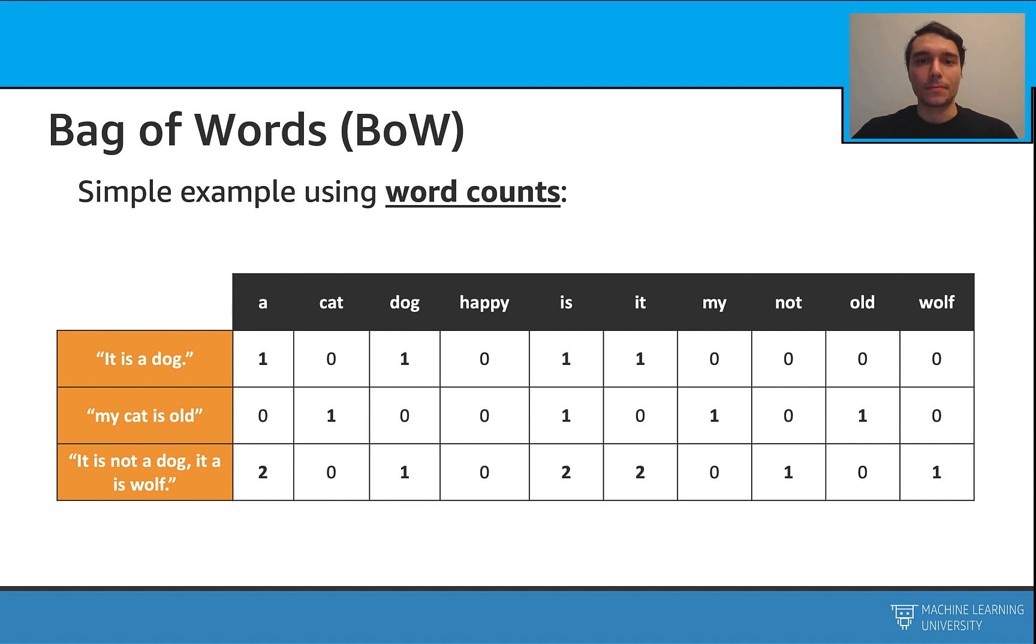Let's have a simple example. Assume we have these three documents, and we are going to calculate the word counts. We create a vocabulary from these documents, and we place them in our columns. And then we calculate the word counts.